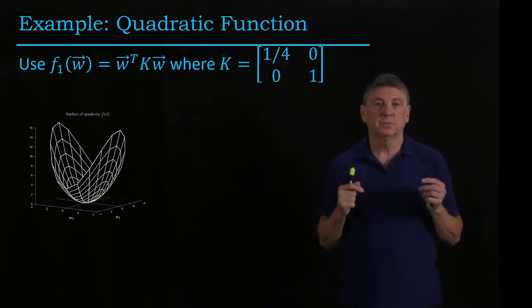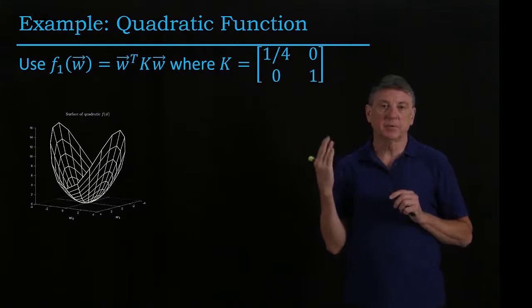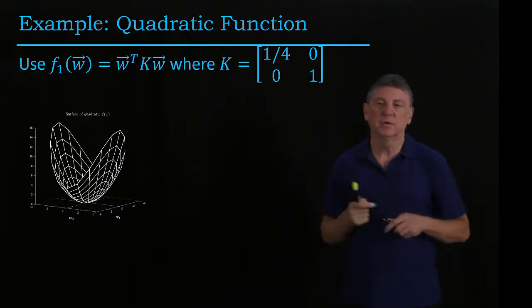This produces a paraboloid, but instead of being a paraboloid that's a surface of revolution, it looks squished in one direction.